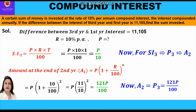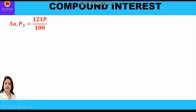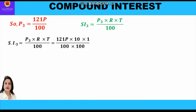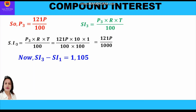The amount at the end of the second year, 121P/100, becomes the principal of the third year. So the interest for the third year is SI₃ = P₃ × R × T / 100. Putting the values: P₃ = 121P/100, R = 10%, T = 1 year. Simplifying, we get SI₃ = 121P/1000.